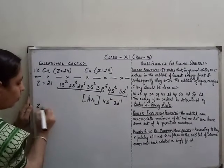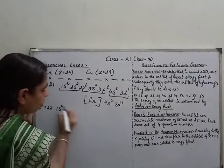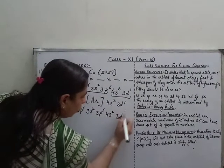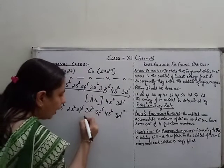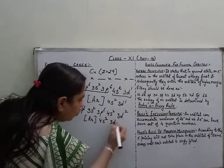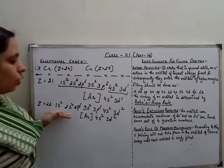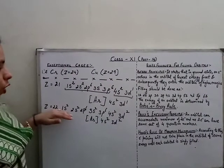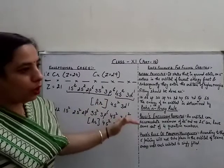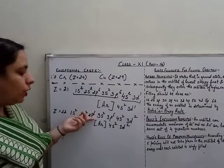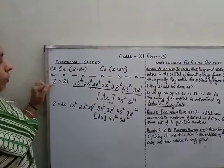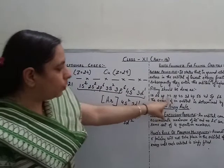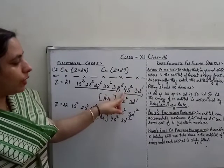This was the Aufbau principle: orbitals of lower energy get filled first, then the electron enters higher energy orbitals. Until the lower energy orbitals are fully filled, the electron will not go to the next orbital. The key difference here is that 4s gets filled before 3d, while the trend for 1s, 2s, 2p, 3s, and 3p continues as usual.